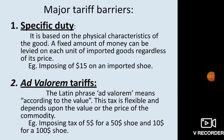The first type is specific duty. It is based on the physical characteristics of the good. A fixed amount of money is levied on each unit of imported goods regardless of its price — so value is not considered here, only the physical characteristics of the product. Examples include shoes, automobiles, and electrical products.